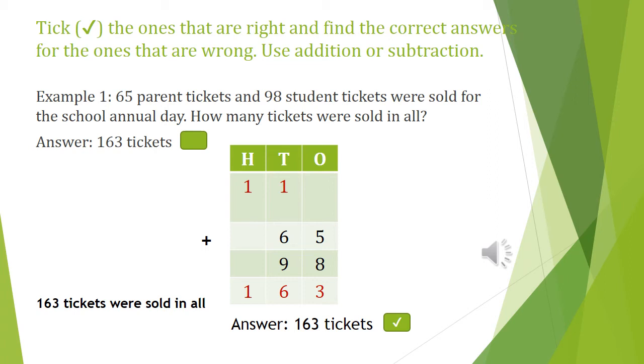And now counting the number of digits in the tens place, we have 1 plus 6 plus 9 gives you 16. So 6 is placed in the tens place and 1 is regrouped to the hundreds place. And finally by adding the number of digits in the hundreds place, we have 1 plus 0 gives you 1.